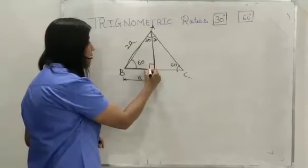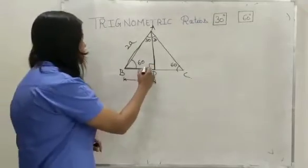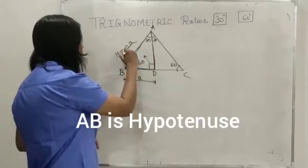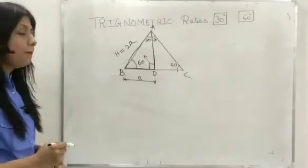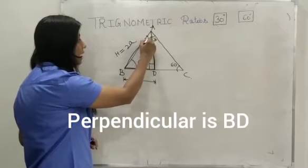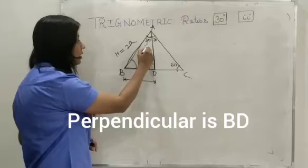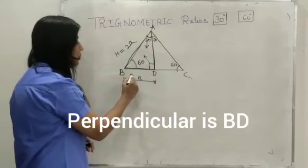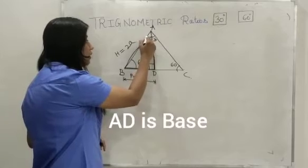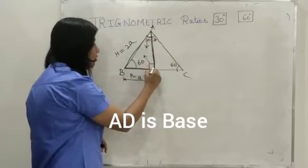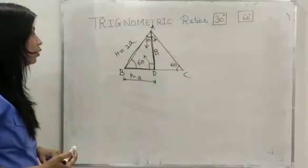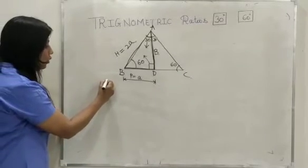At the 90 degree angle, the hypotenuse is always opposite the 90 degree angle, so AB is my hypotenuse. The perpendicular is always opposite the angle we are considering — we have considered 30 degrees, so AD is my perpendicular. The side adjacent to the 30 degree angle is my base.